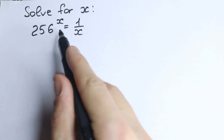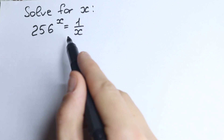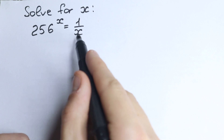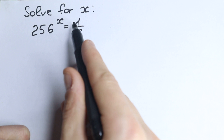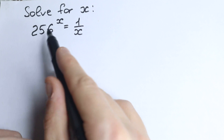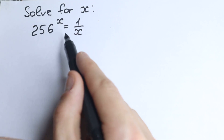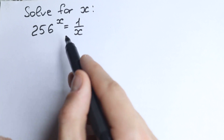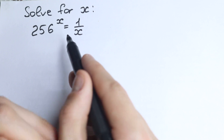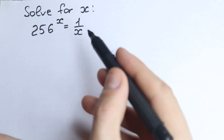We have 256 to the power x equal to 1 over x. On the first look this is a hard question because we have x in our denominator and x in our power, we have a base, we have a fraction — so this looks like an exponential function combined with another function. A lot of complicated problems right here. But in this video I'm going to show you a really great approach and a really fast trick.